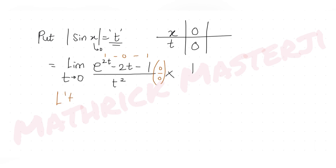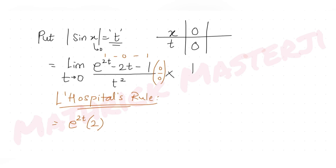Applying L'Hôpital's rule: the derivative of the numerator is e^(2t)·2 minus 2, and the derivative of the denominator t² is 2t. This gives [2e^(2t) - 2] / 2t, multiplied by 1.